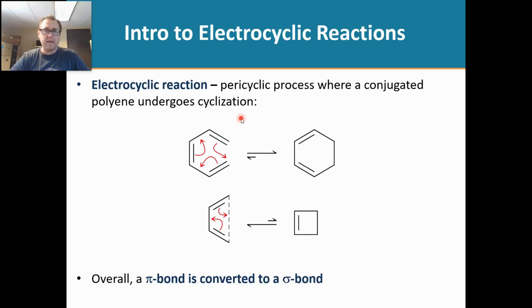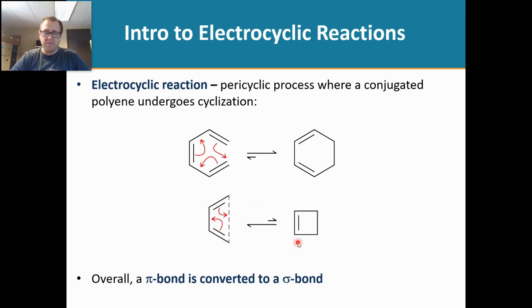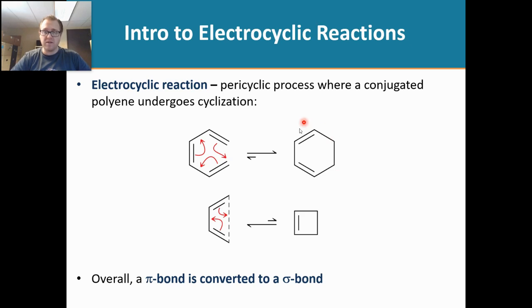We will now take a look at electrocyclic reactions. In electrocyclic reactions, we have a conjugated system with only one molecule, and it cyclizes to form a cyclic compound. The equilibrium favors forming the product in one case because we are trading one pi bond for a sigma bond, and sigma bonds are stronger — so this is thermodynamically favorable.